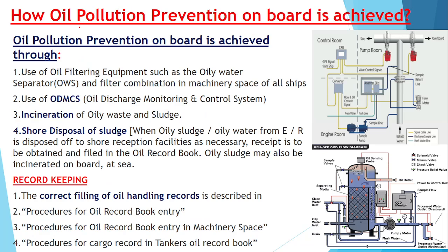Now let's see how oil pollution prevention on board is achieved. For the machinery space, an OWS — Oily Water Separator — is provided. When bilge water is discharged overboard, it is first processed through the treatment plant so that the water discharged has an oil content of less than 15 ppm. For the cargo area, an ODMCS — Oil Discharge Monitoring and Control System — is provided for the slop tank, to discharge slop collected after cleaning cargo tanks.